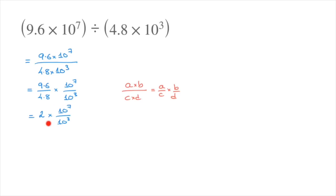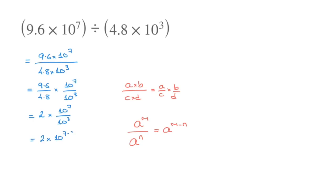Now we need to take care of the second fraction. To do that, we again use our laws of exponents. Remember that if we have a non-zero number a raised to some power m, which is being divided by that same number a raised to the power n, then this equals a raised to the power of m minus n. In the case of this fraction, a would be 10. So using this rule, this equals 2 times 10 to the power of 7 minus 3.